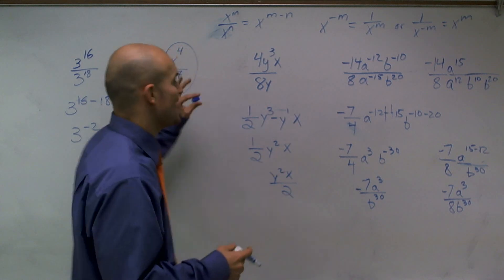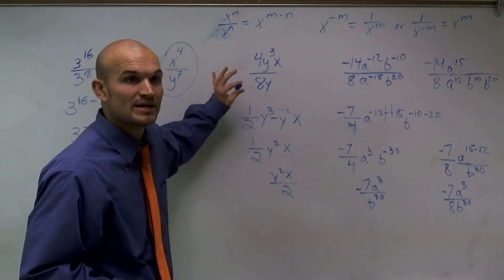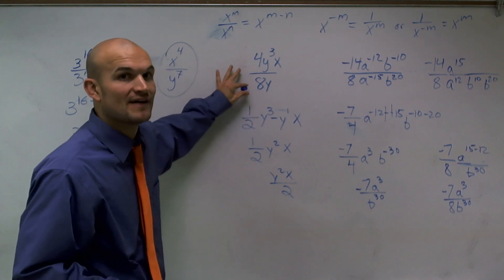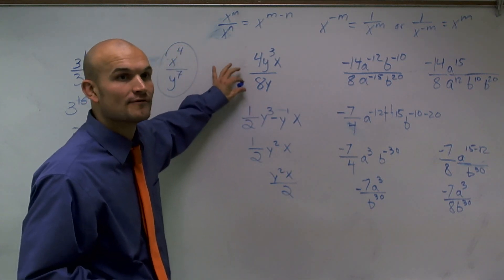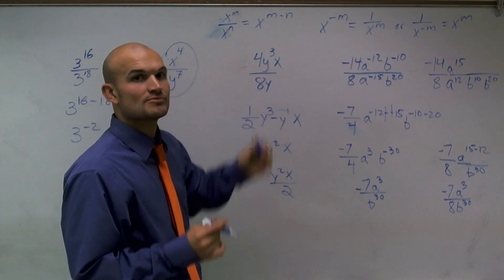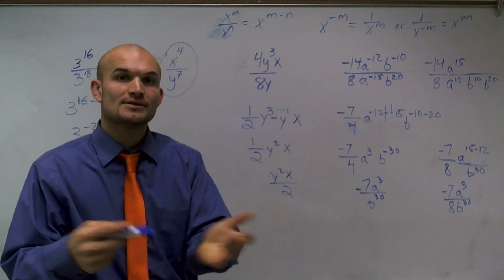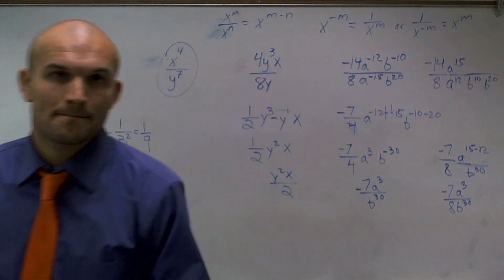Just remember: you have to have the same base. And when you have the same base and you're dividing two numbers with exponents, just subtract the exponents. Thank you for watching — hope to help you out.